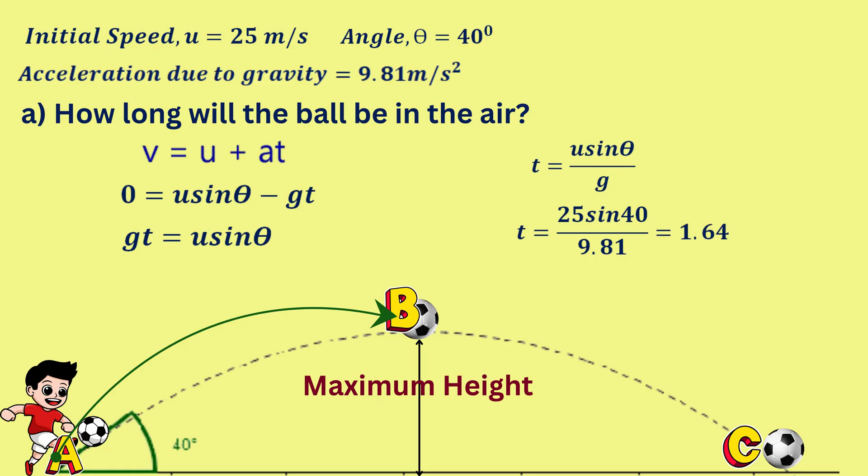Hence, t equals 1.64 seconds. So it takes 1.64 seconds for the ball to travel from point A to its maximum height, point B.